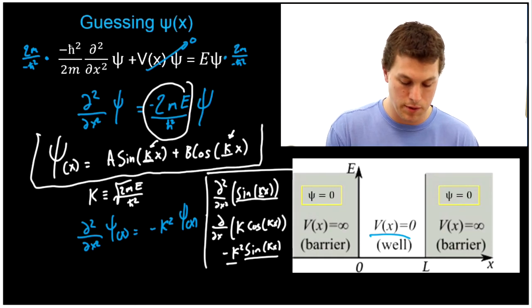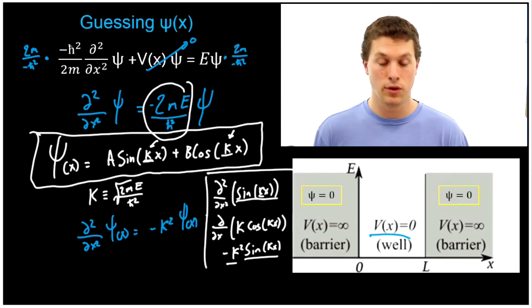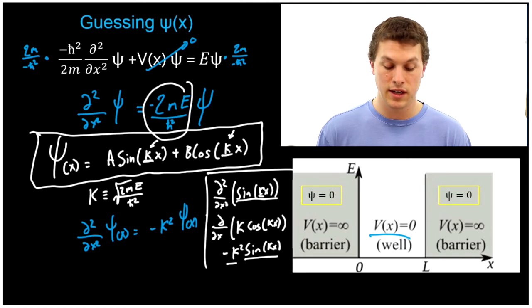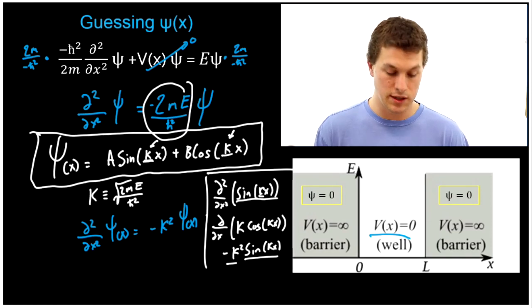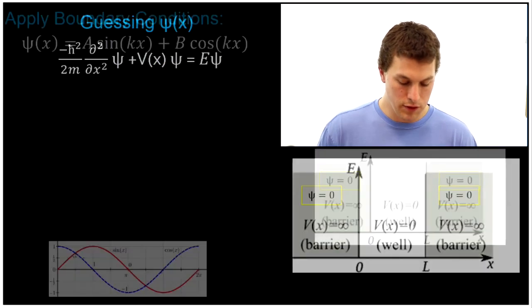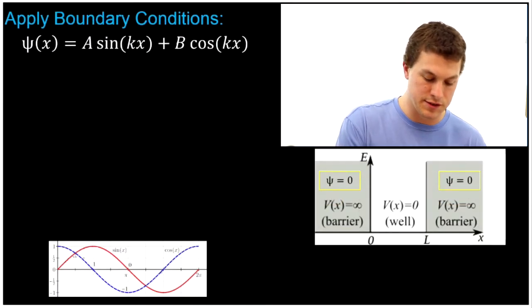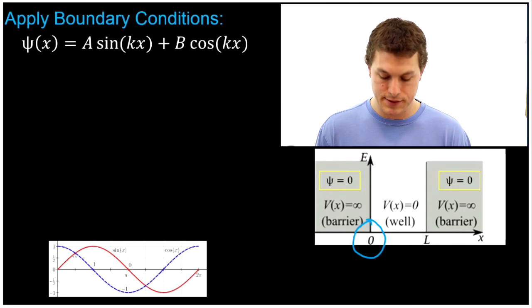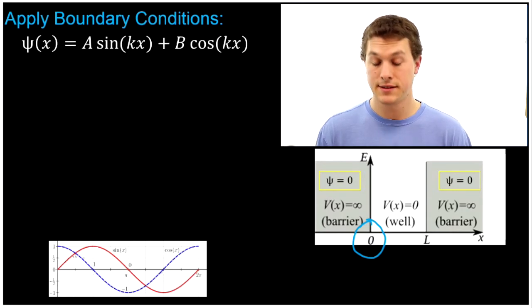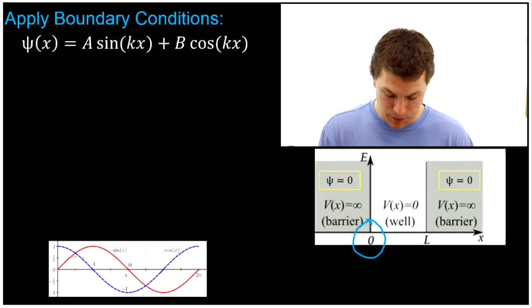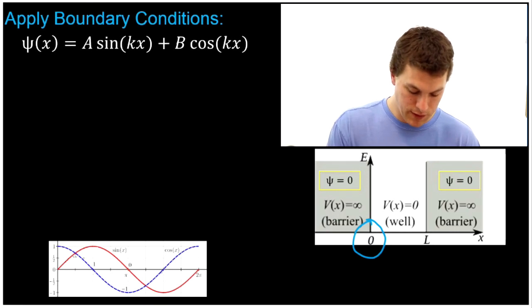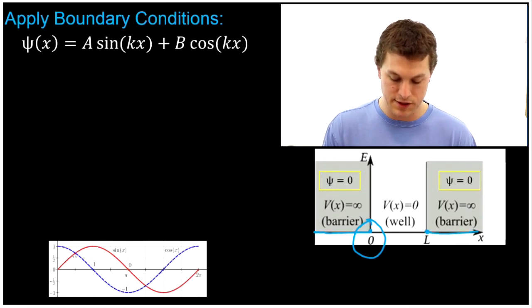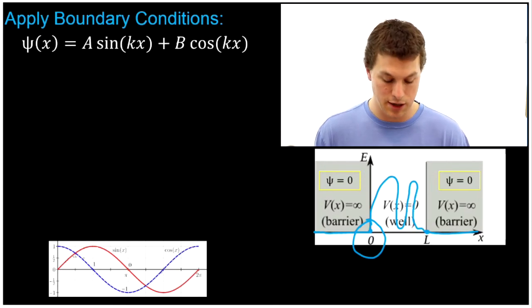So the general form of our solution is psi(x) = A·sine(kappa·x) + B·cosine(kappa·x). Notice it has constants A, kappa, and B that we don't yet know. This is where boundary conditions come into play. We know that at the edges of the box the wave function must be zero, because the wave function is totally flat before it reaches the edge of the box.